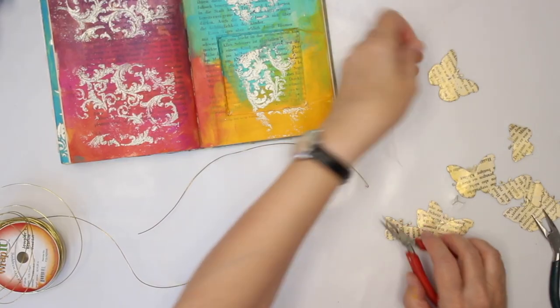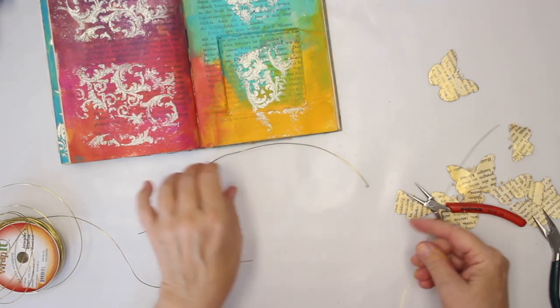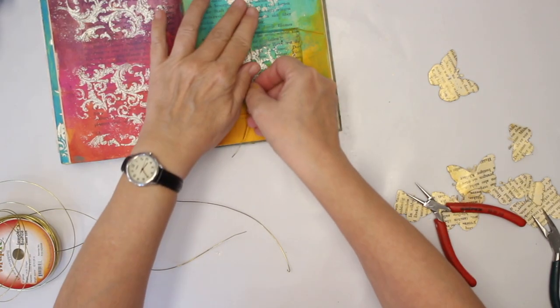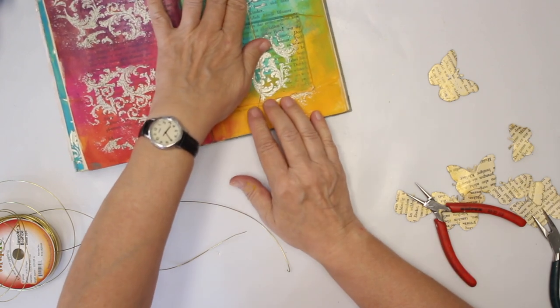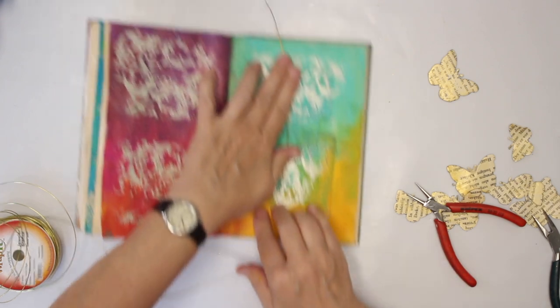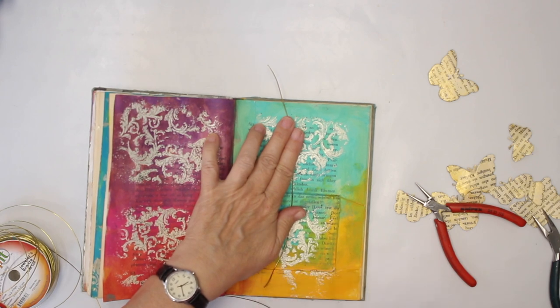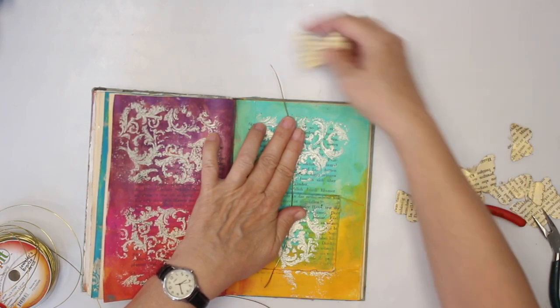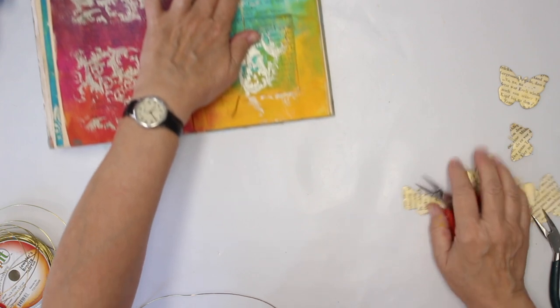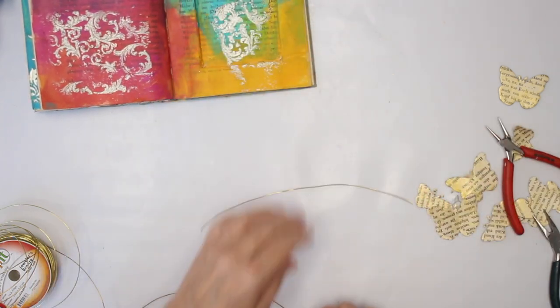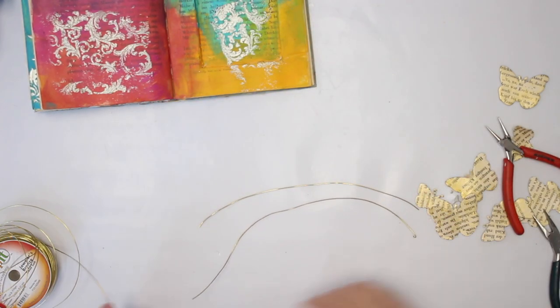You probably were wondering what I need the wire for. Yeah, I want to add some butterflies peeking out of the book. I want them somewhere up here. That's why I need the wire and I'm probably gonna go for three.